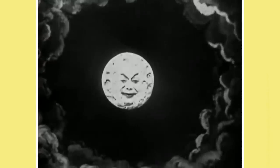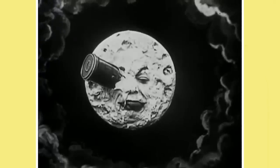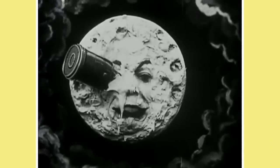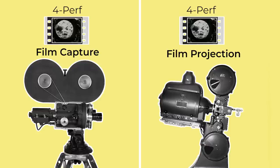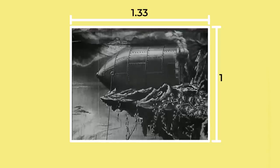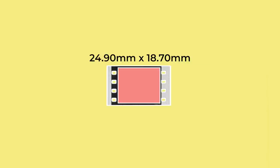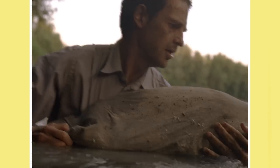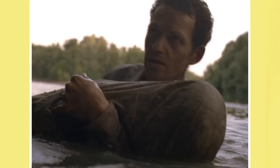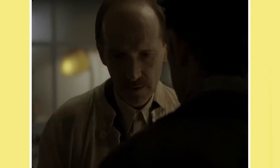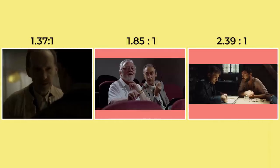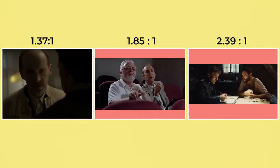In the late 1800s and early 1900s, 4 perf 35mm film capture and projection emerged as the industry standard, producing a tall aspect ratio of 1.33 to 1. 4 perf offers the largest exposure area of 35mm film at 18.7mm tall. Because more surface area is used, the film grain will be smaller and the image will be of a higher quality. This large surface area also allows lots of possibilities for aspect ratios.